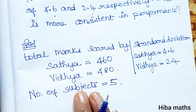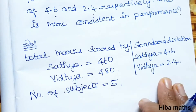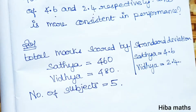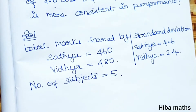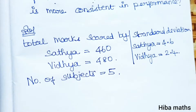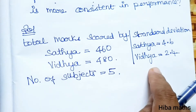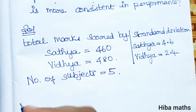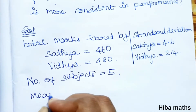To compare consistency, we use the coefficient of variation. Mean is calculated as total marks divided by number of subjects. We will compare the coefficient of variation for both students.